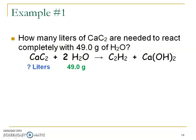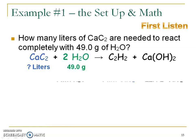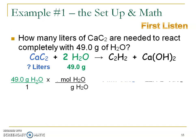Listen first, then I'll have you pause and write the full setup. We start with 49 grams of water — number, unit, substance. Multiply by the conversion line: grams of water on the bottom, moles of water on top. That's mole island — one mole, and pause to find the mass of H₂O. Hopefully you got 18.02 grams. Next, multiply by another conversion line: moles of water on the bottom, moles of calcium carbide on top. This is the mole ratio — use the coefficients from the balanced equation: one goes with calcium carbide, two goes with water.